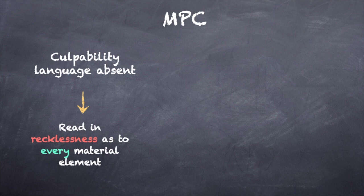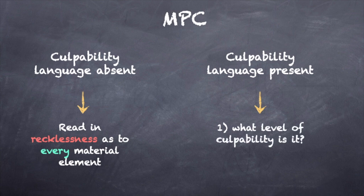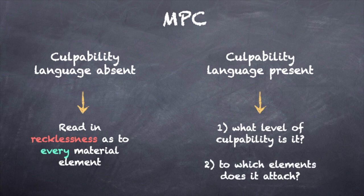This raises our next set of questions. What if culpability language is found in the statute? Now we must ask: what level of culpability is meant by the language the legislature uses, and to which material elements does it apply? The statute construed in the case of People v. Olson is an excellent example to illustrate how the Model Penal Code works out an answer.